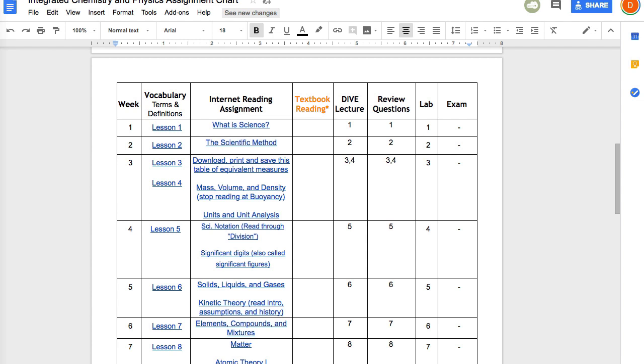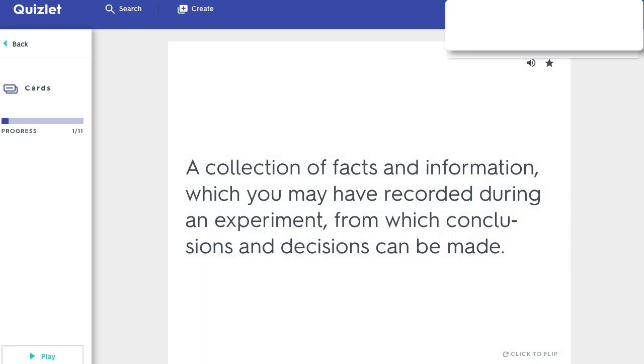And then you want to review those three to four days per week. Let's take a look at how to access those digital flashcards using your assignment chart. Here's the integrated chemistry and physics assignment chart. In the top left column, we'll just start with week one lesson one and we'll click on that.